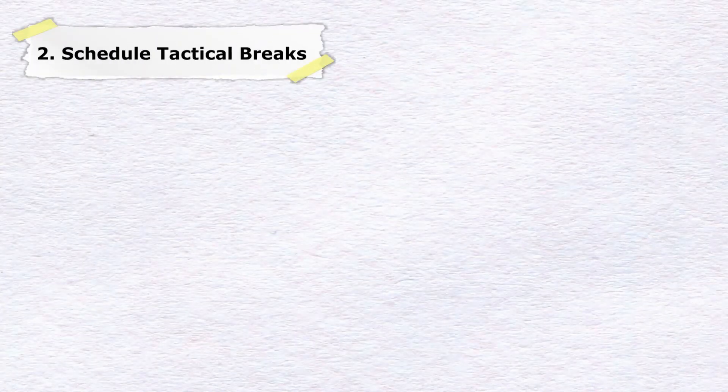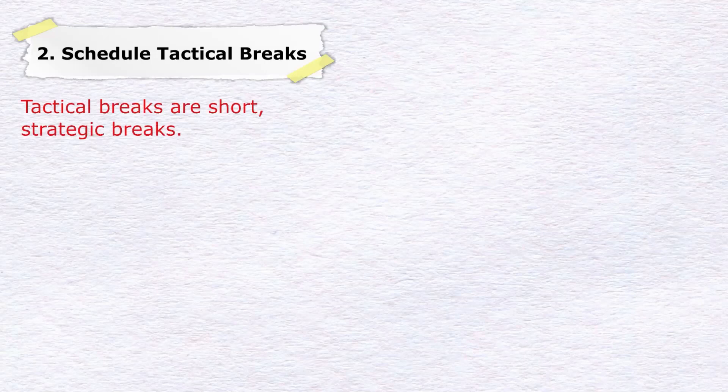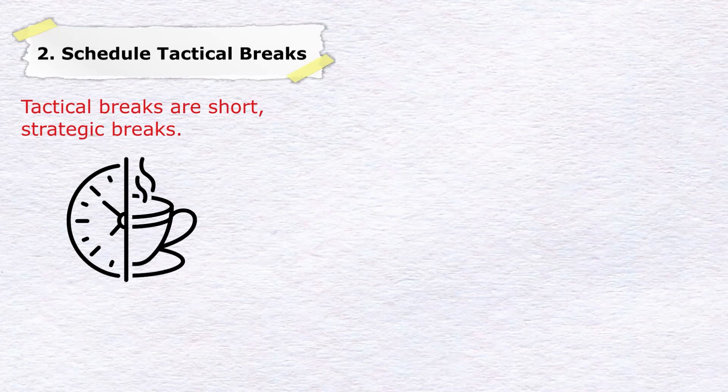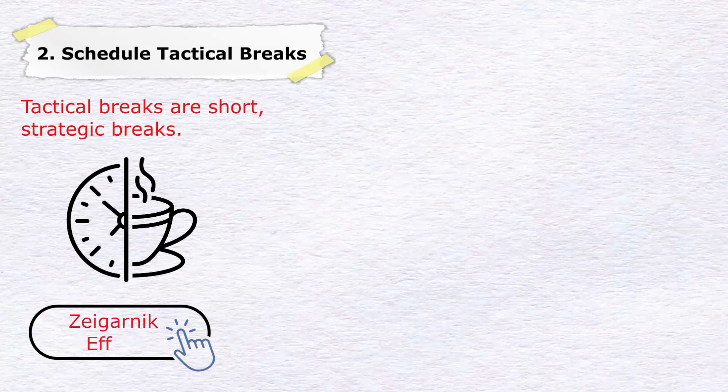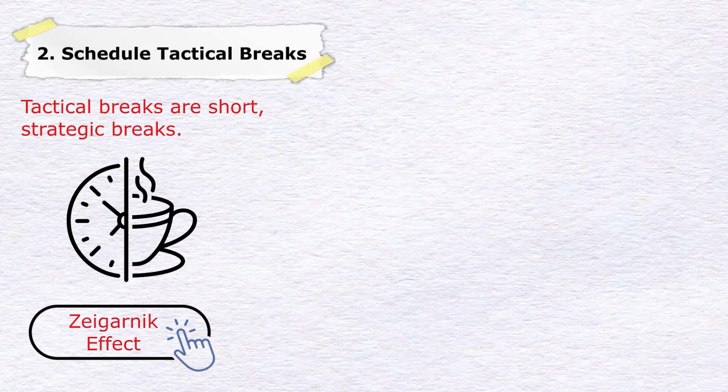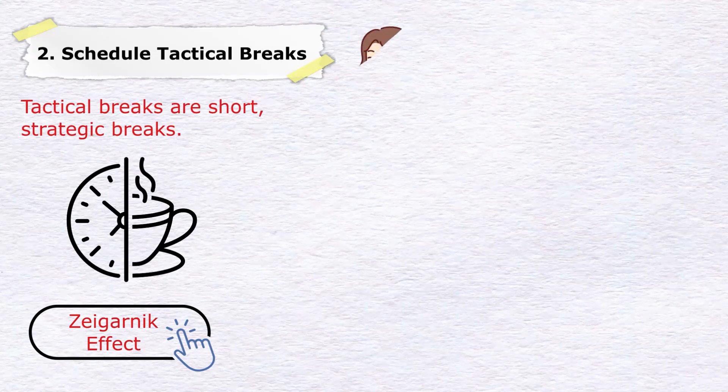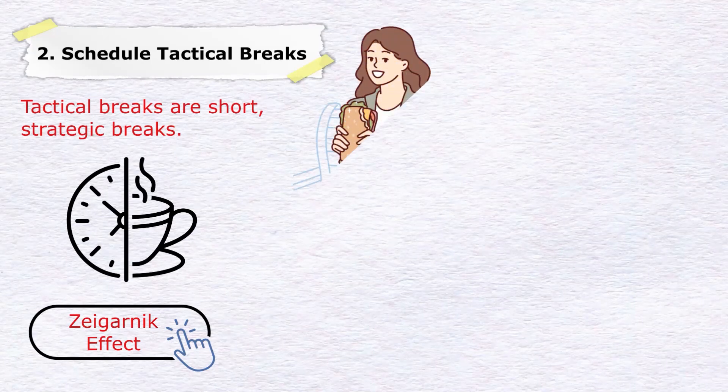Number two: schedule tactical breaks. Tactical breaks are short, strategic breaks that are designed to help you stay focused, motivated, and productive throughout the day. As counterproductive as leaving tasks incomplete may seem, this can trigger the Zeigarnik effect and increase your motivation to finish it sooner rather than later.